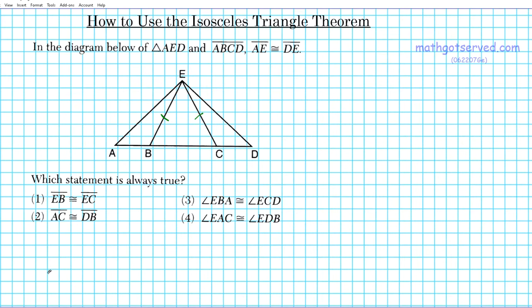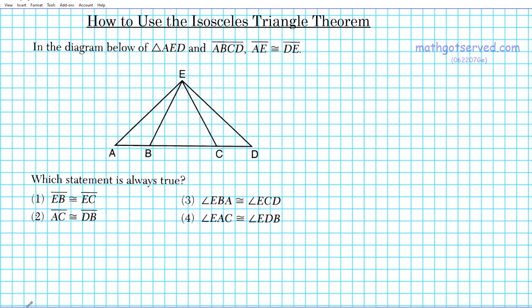Is that true? Option two says segment AC is congruent to DB — so this segment right here is congruent to this segment right here. Is that true? Next, option three says angle EBA, this angle right here, is congruent to angle ECD. Is that the true statement?